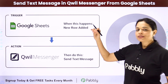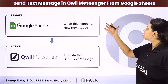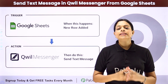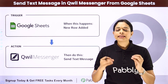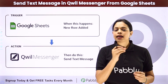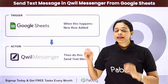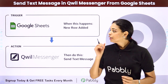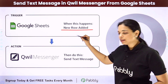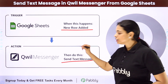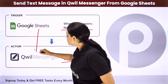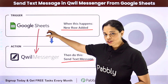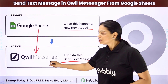In this video, we are going to see how to send a text message in Quill Messenger from Google Sheets. Every time a new row is added in my spreadsheet with some new data — say, information about a new lead — I want to send a message in Quill Messenger to talk to my team about that new lead. We are going to integrate these two applications using Pabbly Connect. The trigger application will be Google Sheets and the action application will be Quill Messenger.